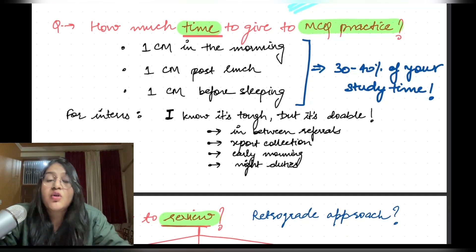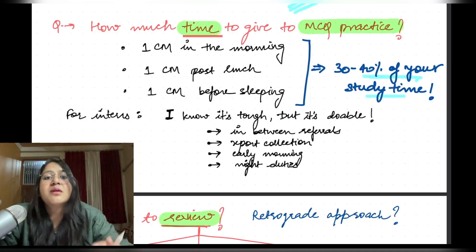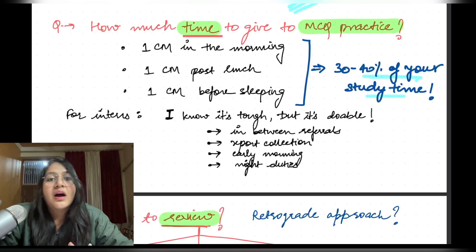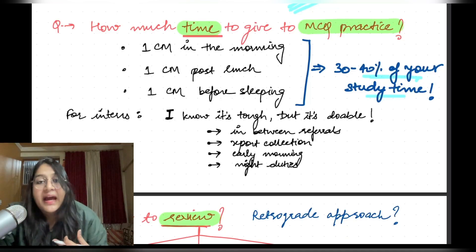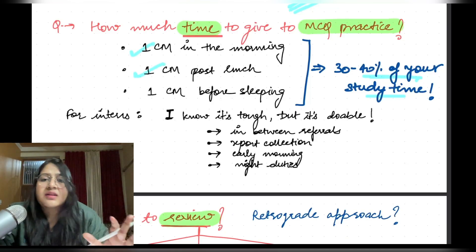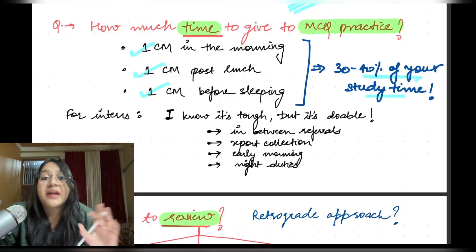How much time to give to MCQ practice? Practicing MCQs is almost equally important as reading theory, so at least 30 to 40 percent of your study time should be given to MCQ practice. If you're in the beginning of preparation, give 30 percent, but as you come closer to the exam, give 50 to 60 percent. What I used to do: one custom module in the morning, one post-lunch when I'd be lazy to open notes, and one before sleeping — three custom modules every day.